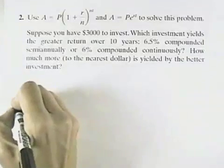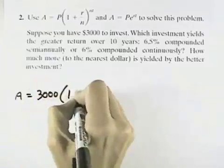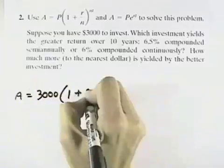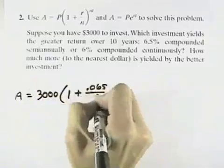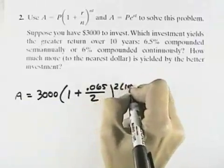Well, let's look at the semi-annual investment. So it's A equals our $3,000 principal that we're investing times 1 plus the rate of .065 that's semi-annually, twice per year it's compounded. And so twice per year it's compounded for 10 years.